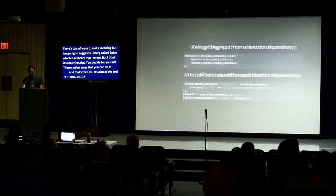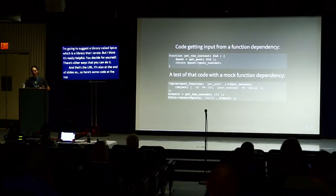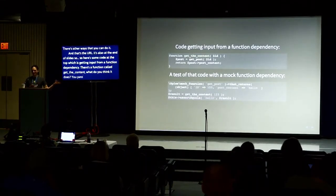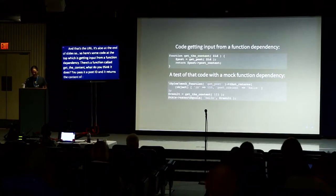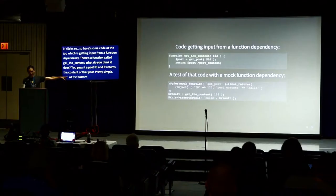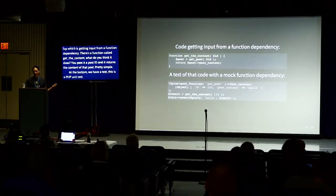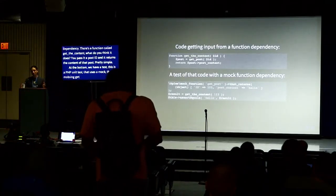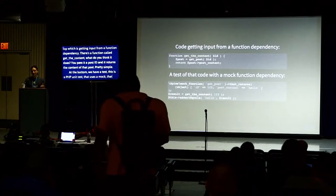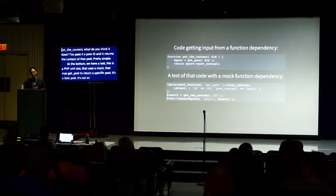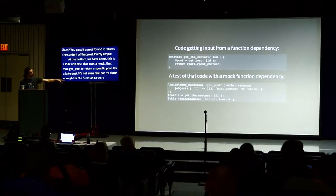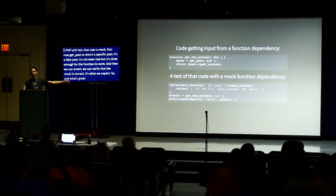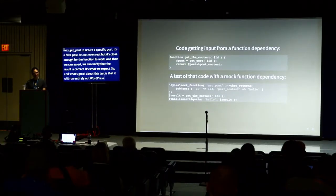At the top we have a function that gets input from a function dependency — a function called get_the_content that takes a post ID and returns the content of that post. At the bottom we have a PHPUnit test that uses a mock. It mocks getPost to return a specific fake post — close enough to a real post for the function to work. Then we can assert and verify that the result is correct. What's great about this test is it will run entirely without WordPress.